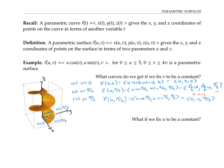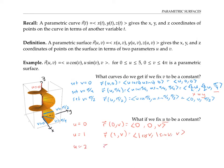If instead we set u to be a constant — for example, u equal to zero — then we get r of 0, v, which is 0 cosine v, 0 sine v, v, so that's just heading up the z-axis. If I set u equal to one, I get r of 1, v: one cosine v, one sine v, v. If I set u equal to two, that's going to be two cosine v, two sine v, v. Both of those are spirals heading up the staircase.